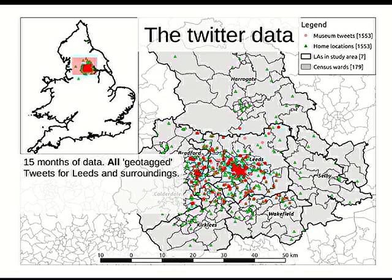The next slide shows the tweet data over a slightly larger dataset. I was given a million tweets to work with — about 15 months of data — which with modern computers is quite feasible. We got the bounding boxes roughly as shown. Strangely, some tweets came from outside the bounding box, which showed we don't fully understand how the Twitter API was working in that case. The green triangles represent each user's favored location away from museum tweets, which is likely in many cases to be their home location.